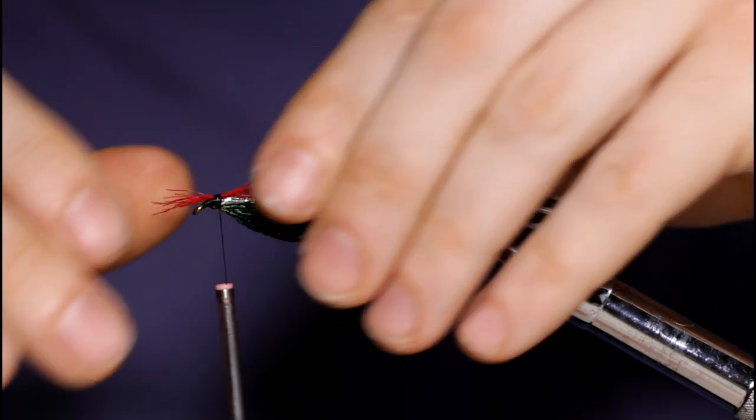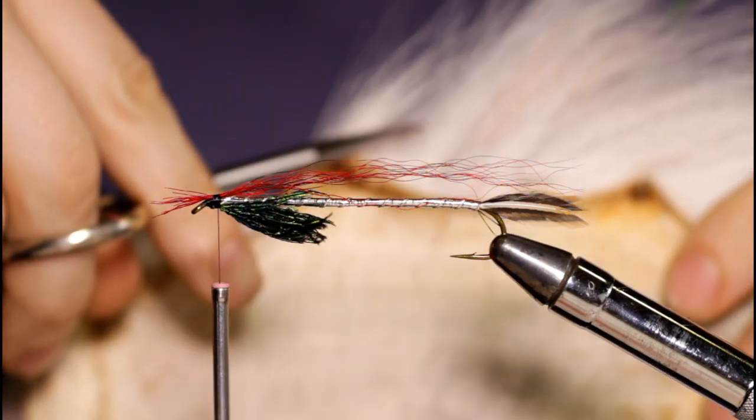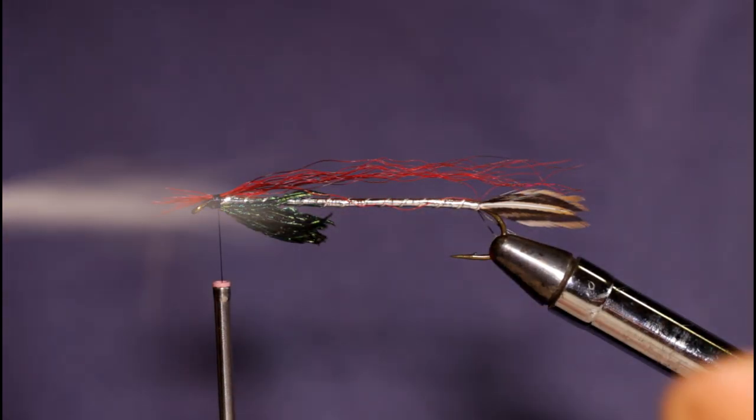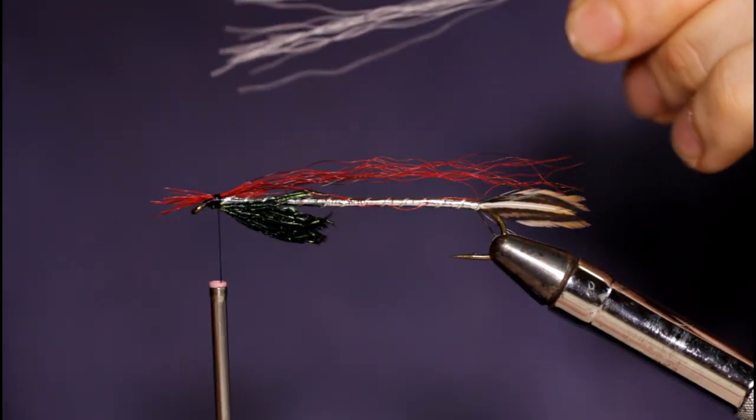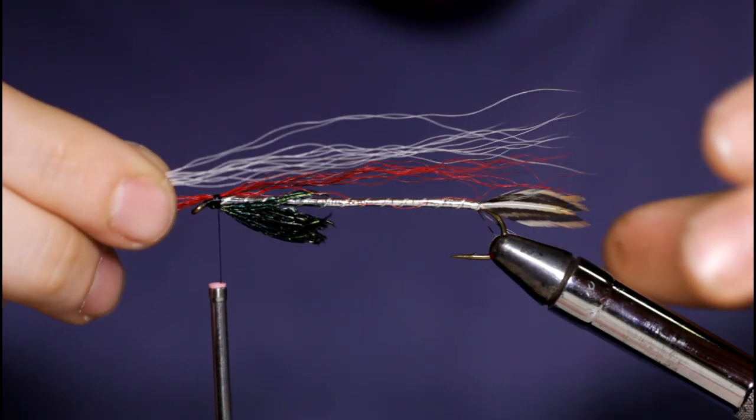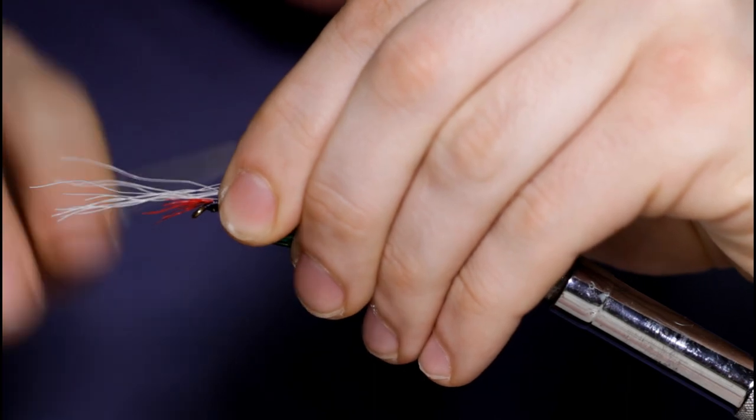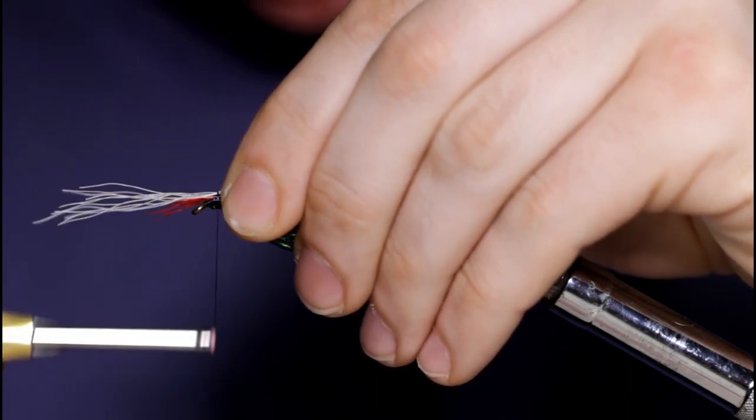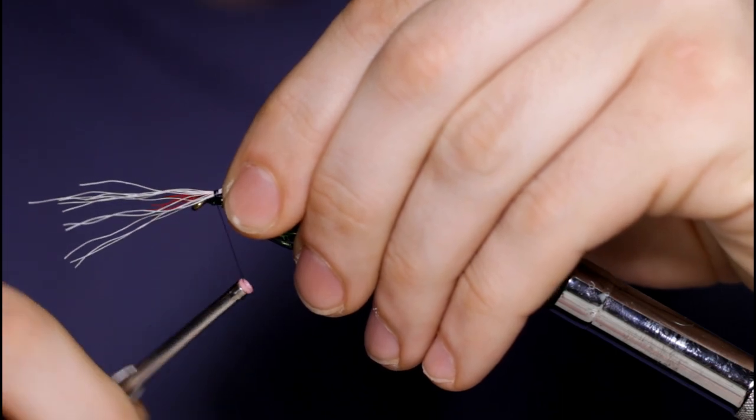All right, now I'm going to grab a natural bucktail and grab some white fibers here and do the same. Pull out the short fibers and all the stray ones that aren't going straight. Set it on top here and just place it on top. Loose turn, couple forward, and bring the thread back.